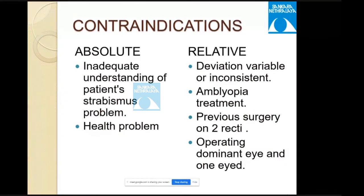Absolute contraindications for squint surgery include when the surgeon has inadequate understanding of the patient's strabismus problem, and when the child has any health problem that could affect anesthesia. Relative contraindications include when deviation is variable or inconsistent, when the child is young enough to still benefit from amblyopia treatment, or if previous surgery has been done on two recti and a third or fourth surgery risks anterior segment ischemia.